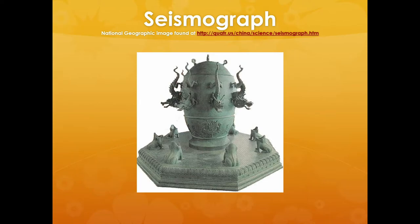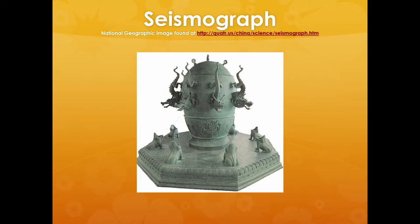The steel balls sat in the dragon's mouths, and when earthquakes would come, the balls would theoretically drop into the frog's mouths. These dragons were all around the exterior of the device, and there was a pendulum on the inside swinging and banging against the inside wall. The thought was that you could tell what direction the earthquake came from by which balls fell out — though in major earthquakes probably all the balls fell out. But this was a first attempt at a seismograph.